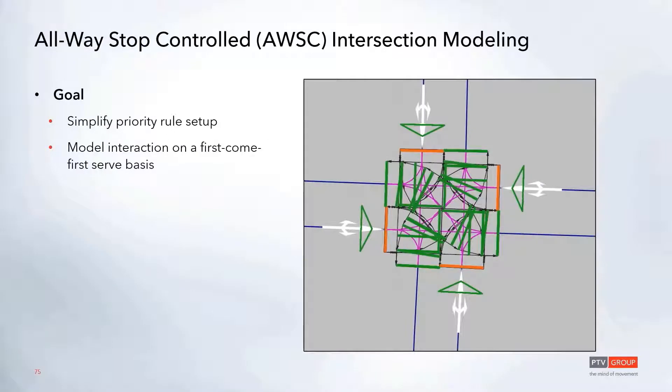Adding in all of these priority rules for an all-way stop controlled intersection can be quite daunting, especially since these tend to not be a focus area of study for a network. So what we wanted to do is come up with a simplified approach where we could just model this interaction on a first-come, first-served basis.